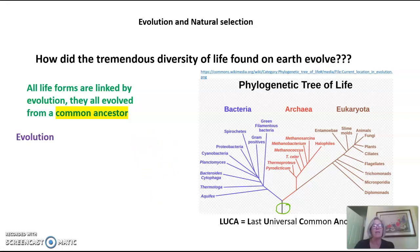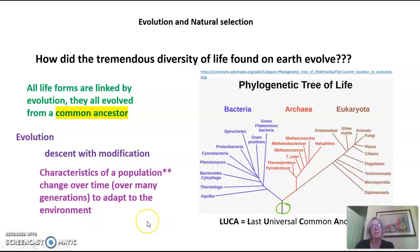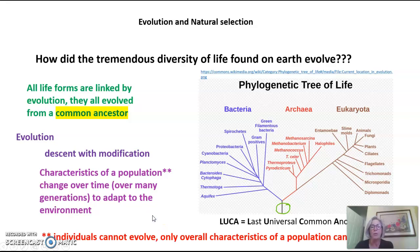What do I mean by evolution? What is the definition of evolution if all of these life forms evolved from LUCA? If you look up evolution in the dictionary, you'll get something like "descent with modification," which is not very helpful. What evolution means is that the characteristics of a population change over time — and by time I mean many generations — and the characteristics change to adapt to the environment. It's very important to realize that individuals cannot evolve; only the characteristics of a population can evolve.